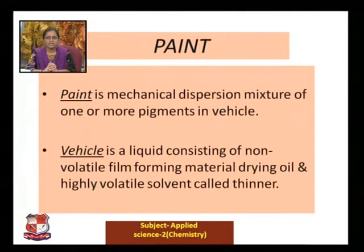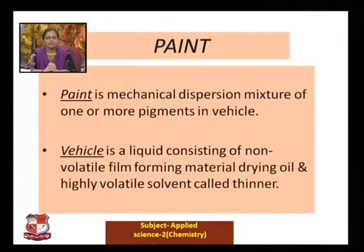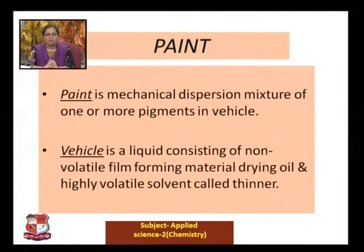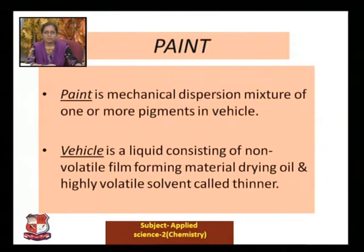The vehicle is a liquid consisting of non-volatile film-forming material — the drying oil — and a highly volatile solvent called thinner. So paint is a combination of volatile and non-volatile components. Once you define the vehicle, you can fully define paint: paint is a mechanical dispersion mixture of one or more pigments in the vehicle.